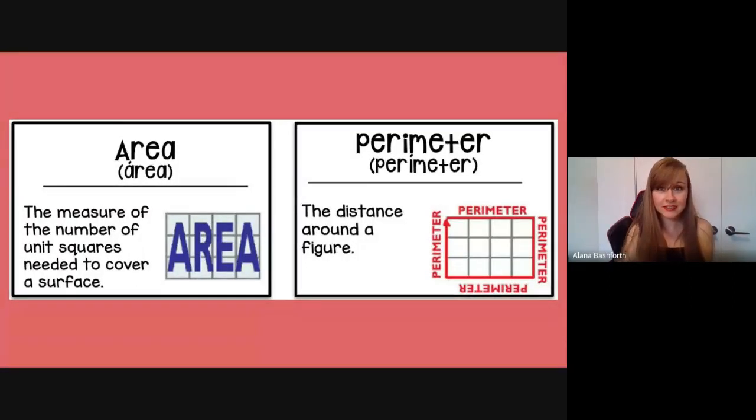So first of all, you need to remember two things. What is area and what is perimeter? Area is the number of squares or boxes inside a rectangle or shape. And perimeter is the area around or the length and width around a shape.